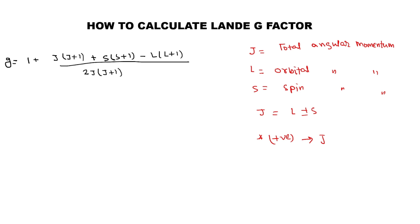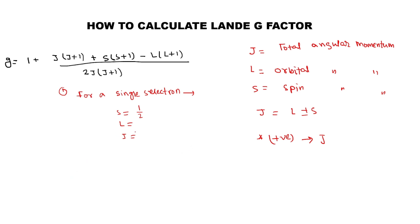Now I will calculate the Landé g-factor for a single s electron. To calculate this, I need the three terms: s, l, and j. For a single electron, s is always one-half. The orbitals are s, p, d, and f. For the s orbital, l is equal to 0.